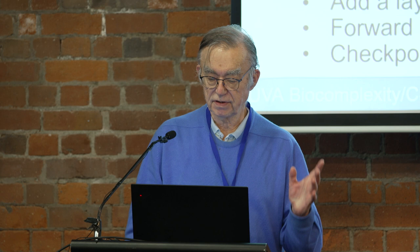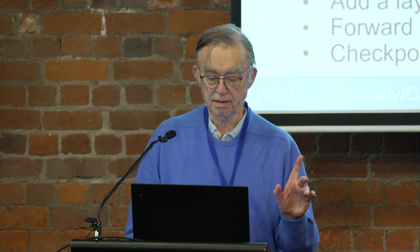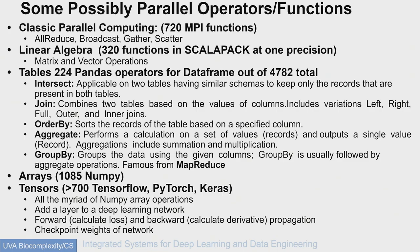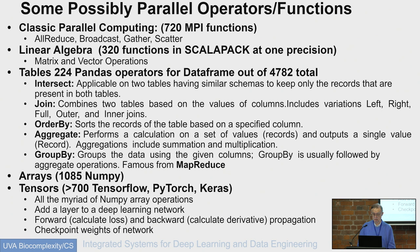If you look at what could be made into a library: MPI has 720 different functions, ScaLAPACK has 320 functions, Pandas has 4,782 functions of which 224 are data frame operations, NumPy has over 1,000 operators, and TensorFlow and PyTorch have almost the same number of operators. The strategy is to take these operators — typically invoked by the user as operators, not in loops — and parallelize them automatically. That's what Cylon does.